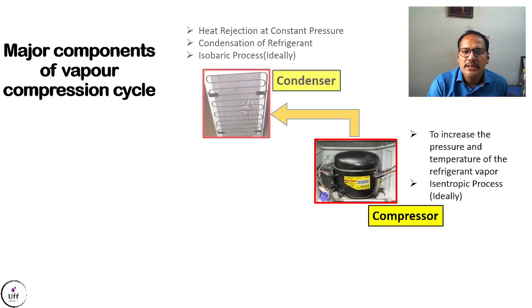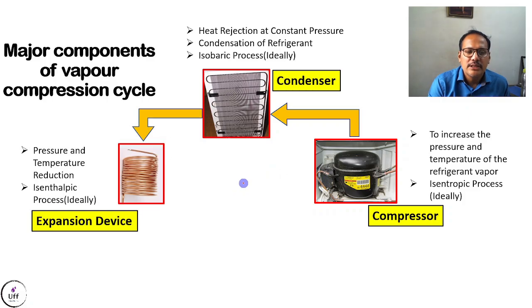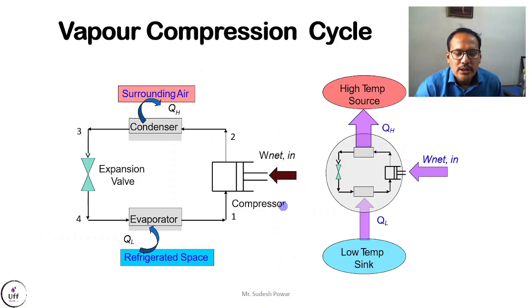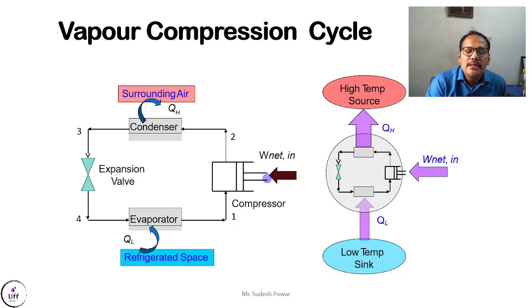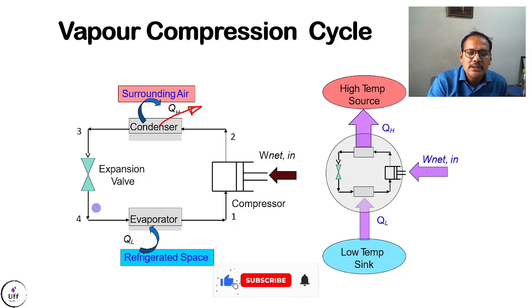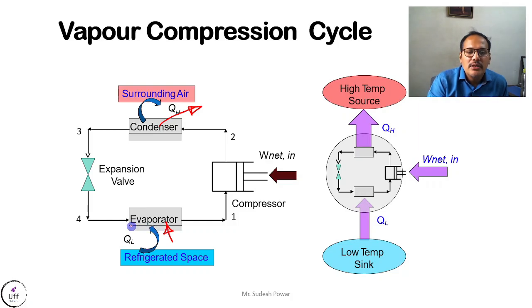So we have seen four components: compressor, condenser, expansion device, and evaporator — and this complete cycle is the vapor compression cycle. In the block diagram, the compressor takes work input from electricity, the refrigerant then goes to the condenser where heat is rejected to the surrounding and vapor converts to liquid, then to the expansion valve where pressure and temperature decrease, and finally to the evaporator where heat is absorbed and the refrigerant converts back to vapor.